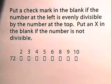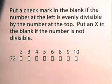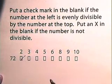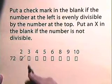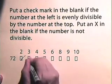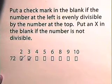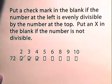Let's examine a couple of numbers for divisibility. Let's look at the number seventy-two. Seventy-two is divisible by two because the last digit is an even number. It is divisible by three because the sum of the digits is divisible by three. It is divisible by four because the last two digits are divisible by four.